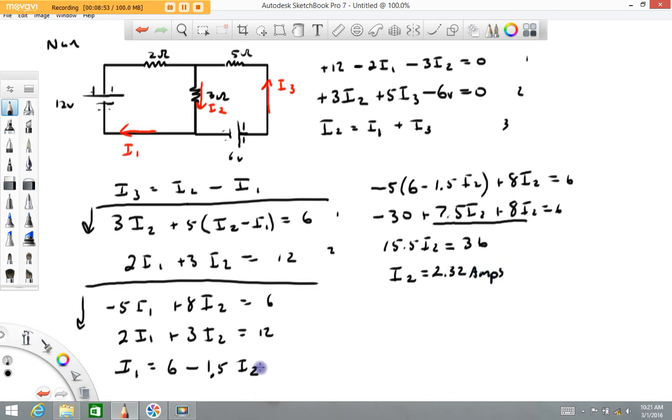I can go back to any of my previous work to get I1. I1 is going to equal 6 minus 1.5 times 2.32 amps, and I get 2.52 amps for I1. And I3 is the difference between them. I3 is going to be I2 minus I1, and that's going to be 2.32 amps minus 2.52 amps, and I get negative 0.2 for I3. So it's looking like I3 is in the other direction.